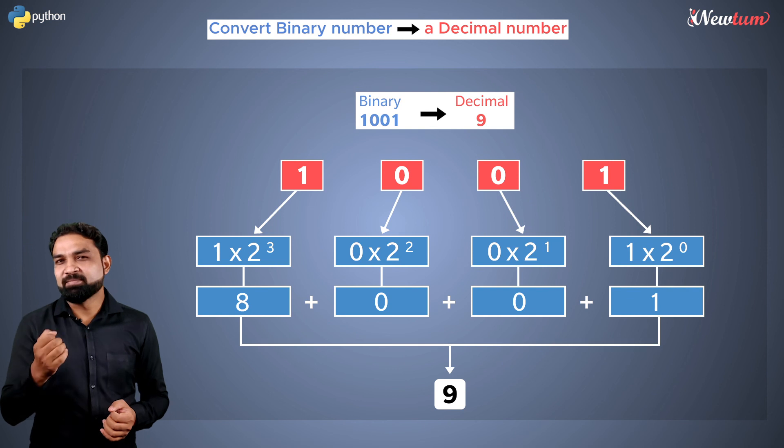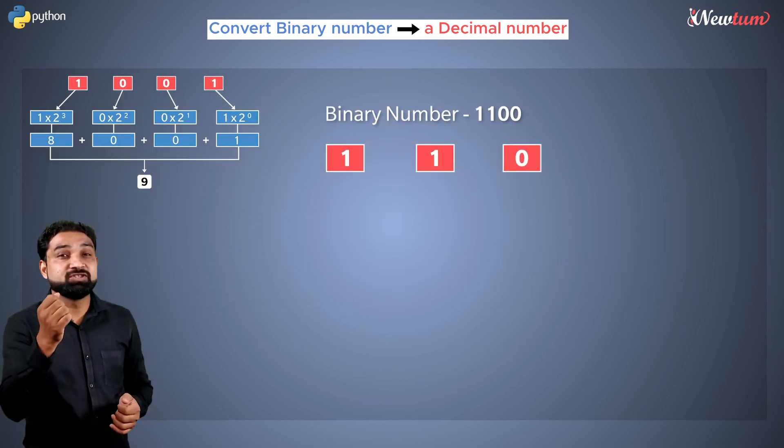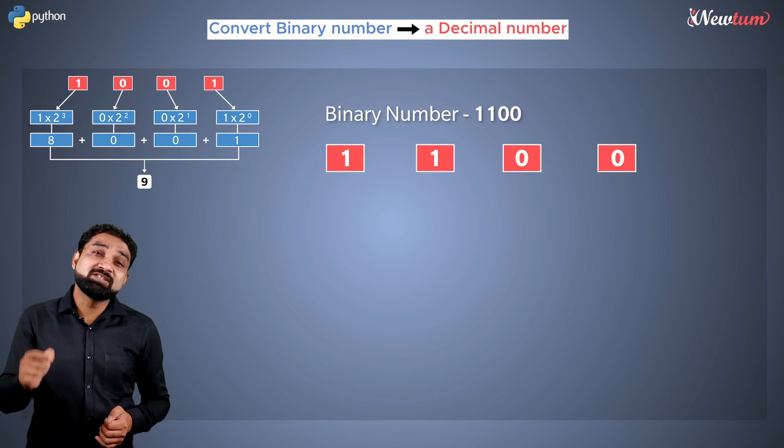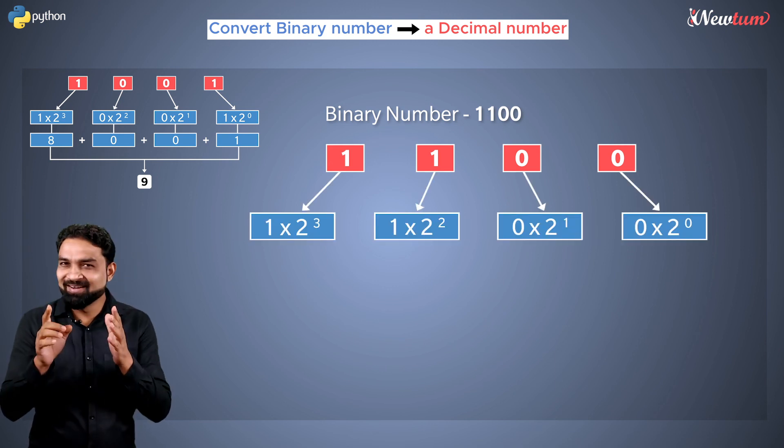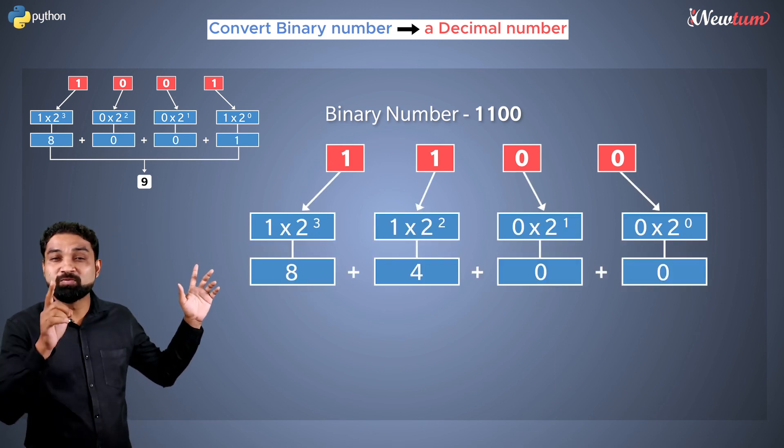Consider another example. Consider binary number 1100. Let's apply the same formula. If you add all, the output will be 12.